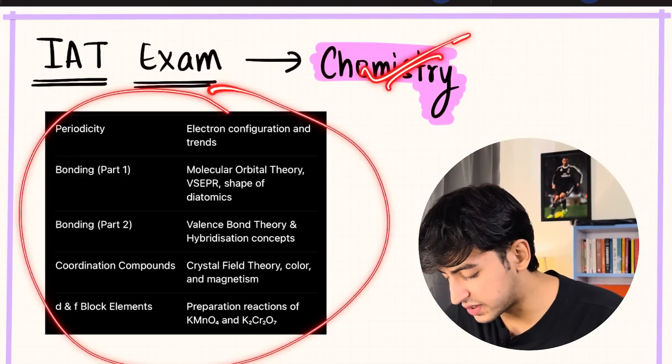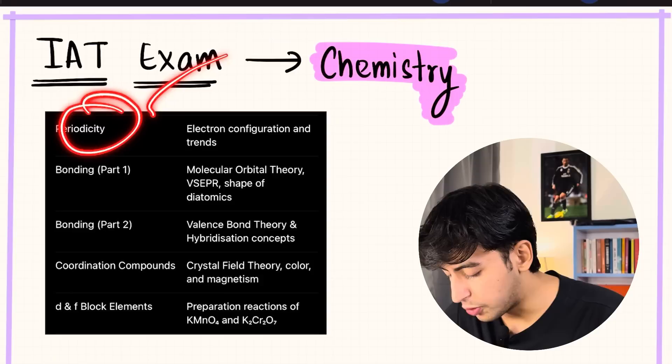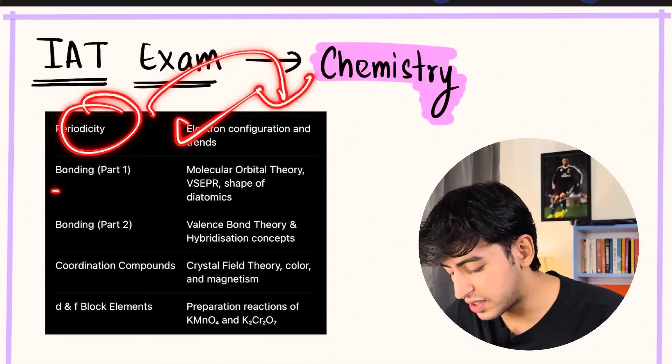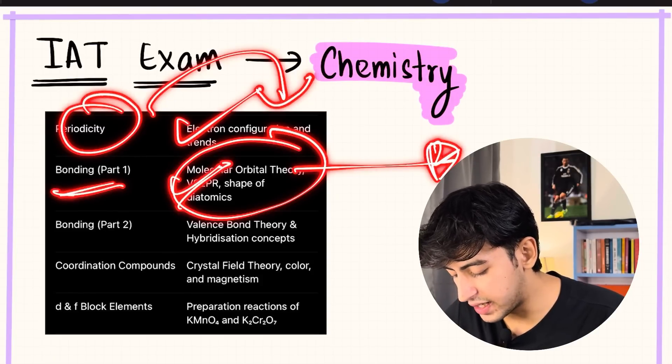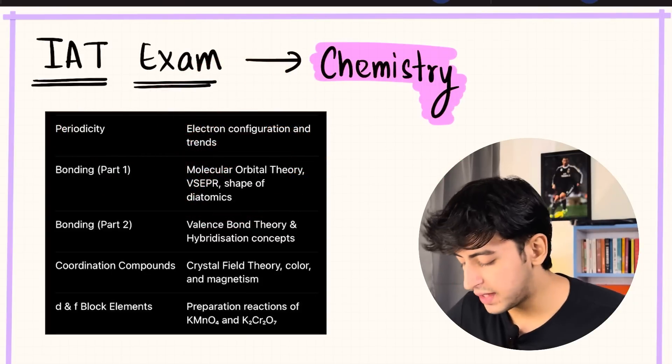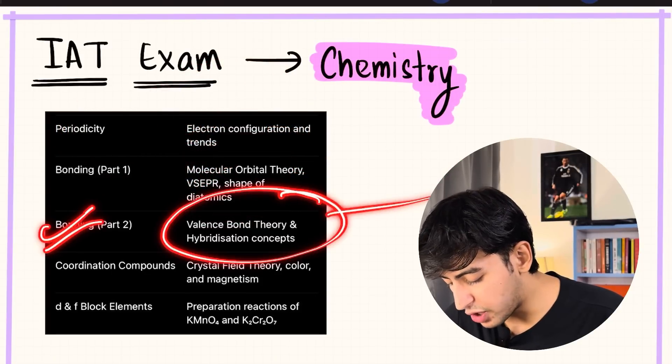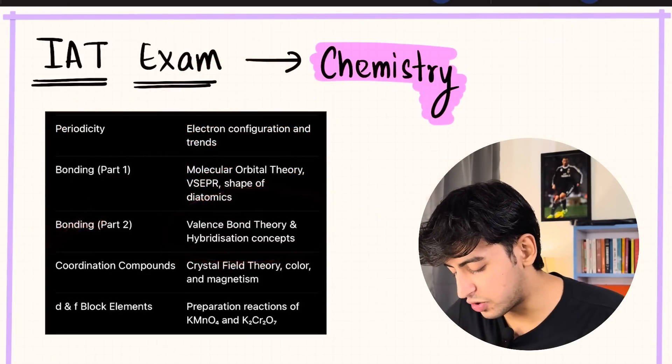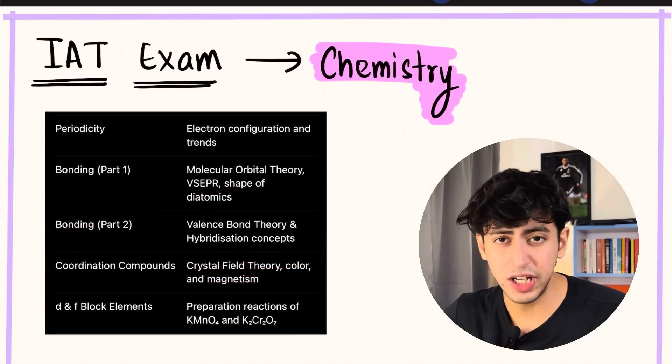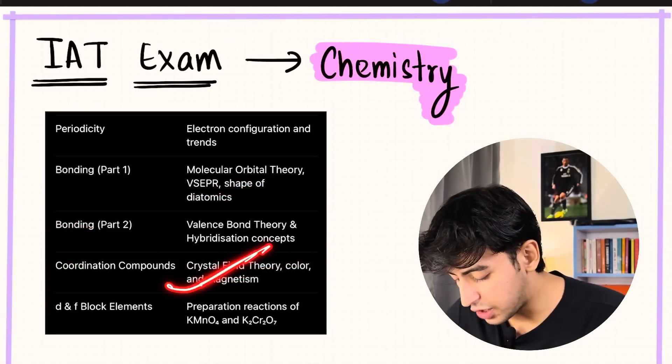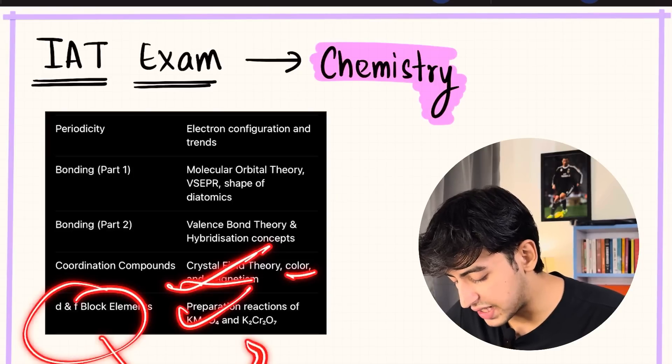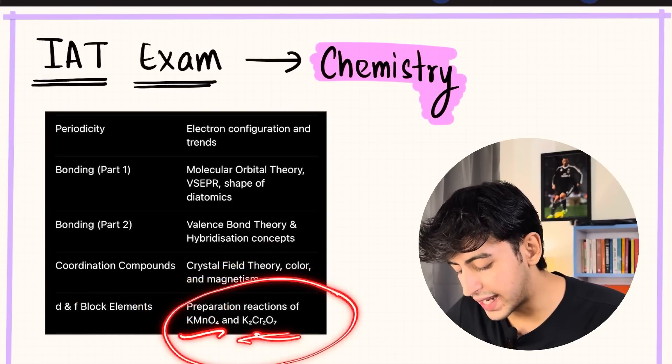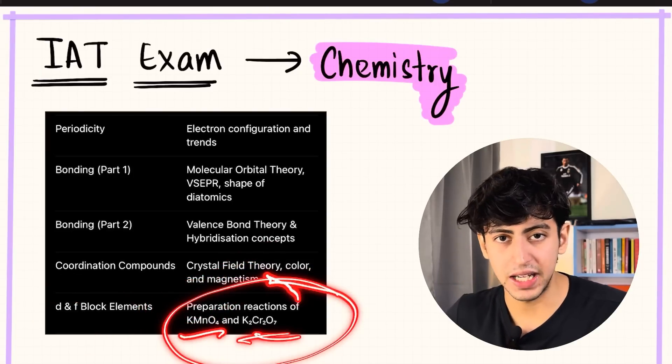Now coming to inorganic chemistry: periodicity, electronic configuration and trends are most important. In bonding you have MOT and VSEPR—your hybridization topic, valence bond theory and hybridization concepts. And then coordination compounds—you need to be very clear with CFT and your magnetism, color and magnetism. D and F block preparation and reactions of KMnO4 and K2Cr2O7 have pretty high weightage.